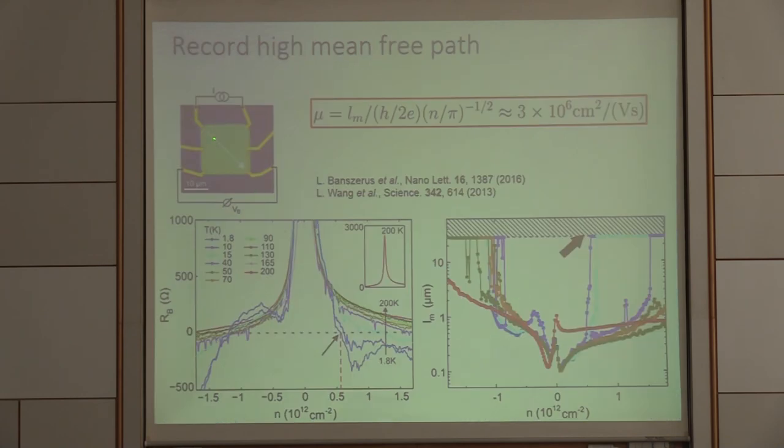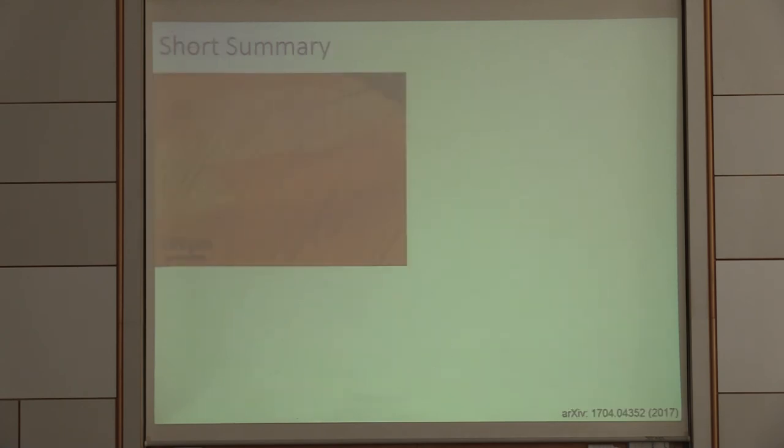But the maximum values we get are on the order of 350,000. If we do ballistic transport experiments like Volodya just showed in the last talk, we can do non-local transport and look at overshoots. We can actually estimate values on the order of 3 million. CVD graphene, I think that's record. And we are only limited by the size. We know this.